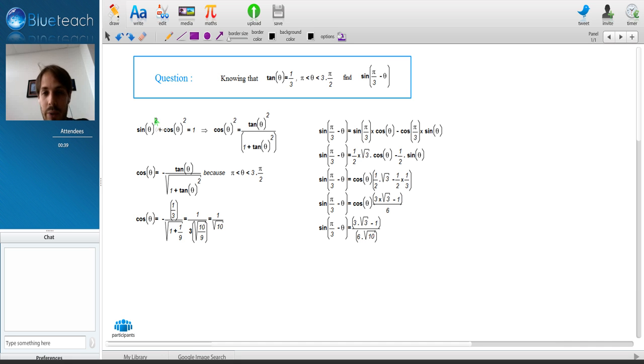The way I did it was to start with sine pi divided by 3 minus theta, and I developed that using the subtraction formula. This equals sine pi divided by 3 times cosine theta minus cosine pi divided by 3 times sine theta.